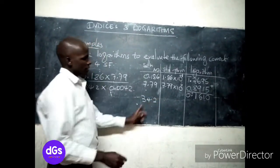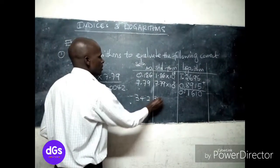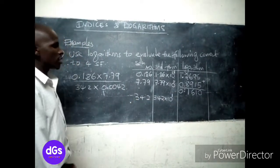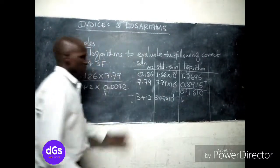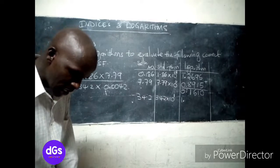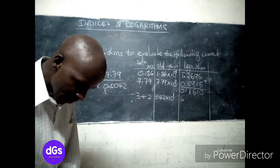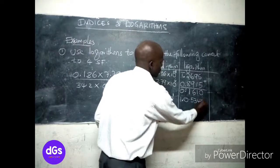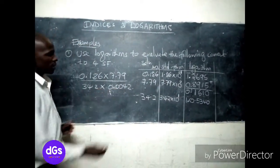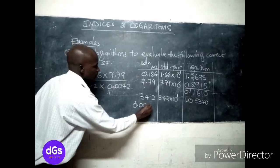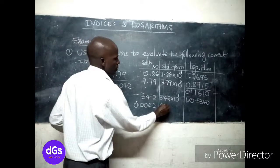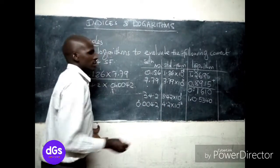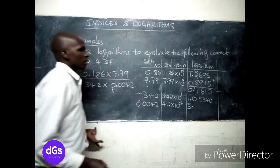For the denominator, the first number is 34.2. Its standard form is 3.42 times 10 to the power positive 1, so the characteristic is 1. We look up 3.42 in the tables. The next number is 0.0042, which is 4.2 times 10 to the power negative 3, so the characteristic is bar 3.